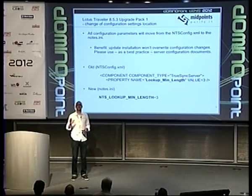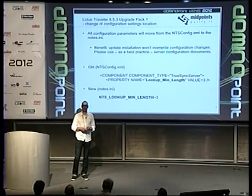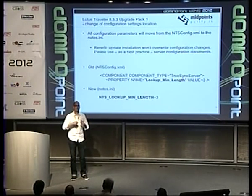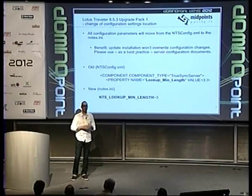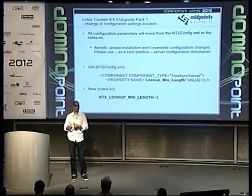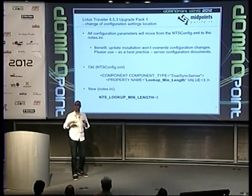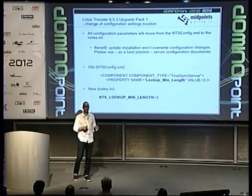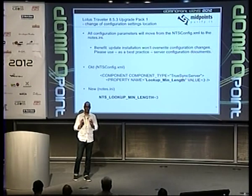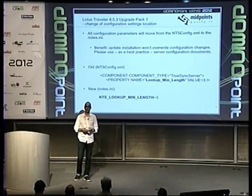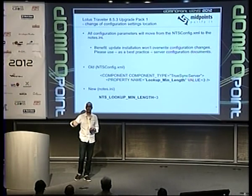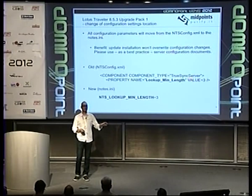A really cool change: they moved configuration away from the XML file. I really hate having to use that NTS config XML file to set specific settings like name lookup length or which fields to return for contact searches. With 8.5.3 UP1, everything can be configured via Notes.ini. That's what Notes Domino administrators like — you can put settings in a server configuration document and change everything there, without going to the file system. You get this with UP1 whether you use HA or not.